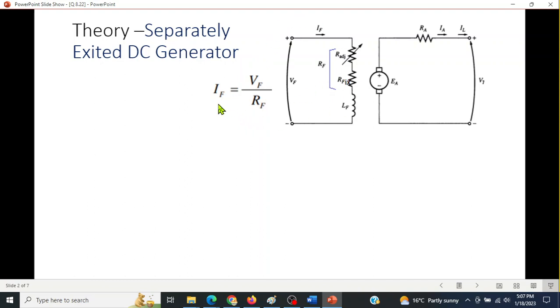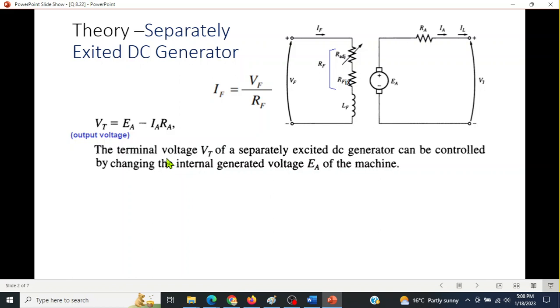And so from here, the field current IF can be written as the voltage divided by total resistance RF. Since this is a generator, the output voltage Vt should be less than the generated voltage because of the voltage drop here.